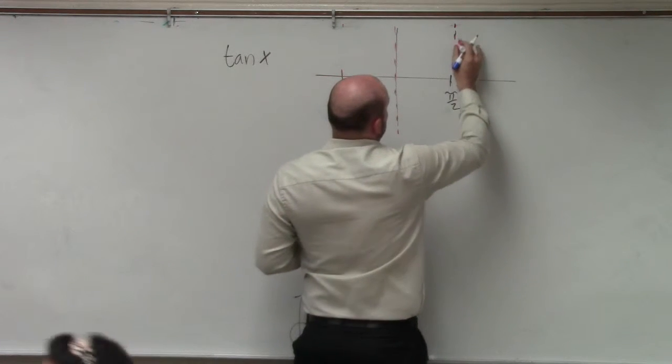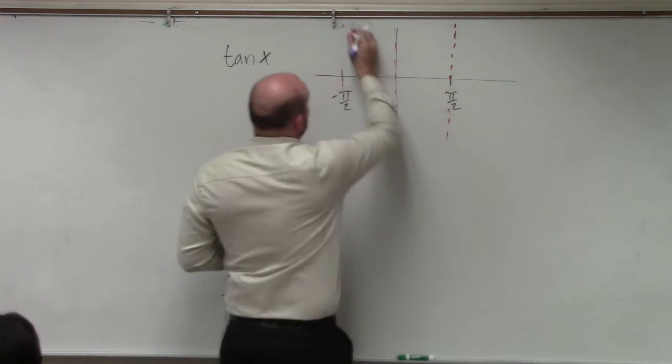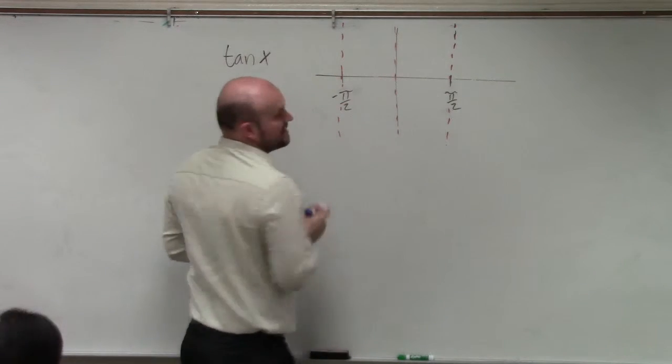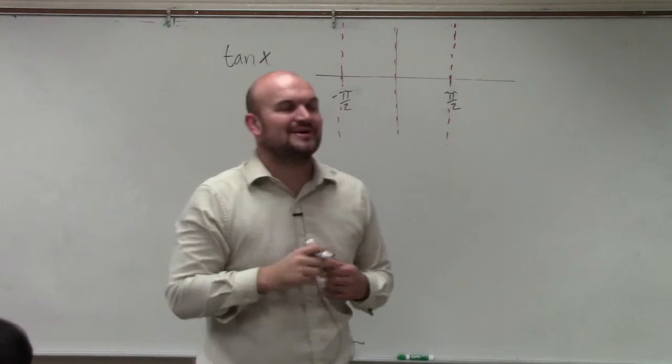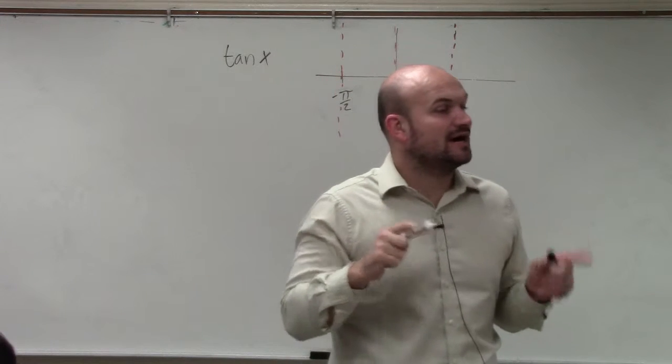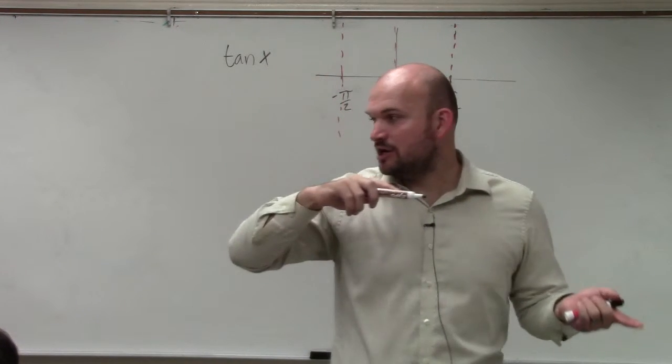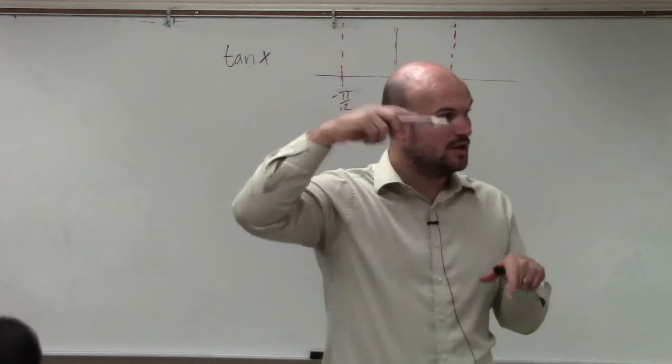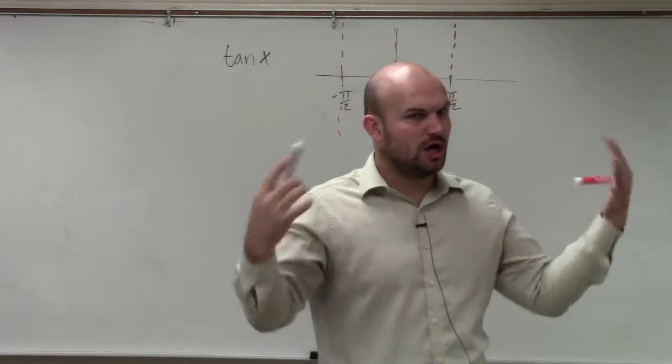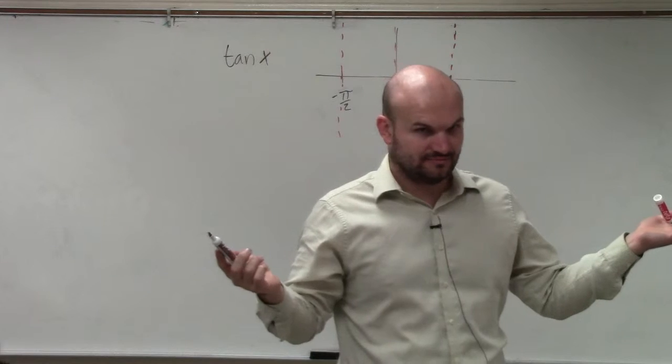So pi halves. If you guys look at the point pi halves, which is same as 90 degrees, that coordinate point is 0 comma 1, right? So 1 over 0, because remember tangent is y over x. 1 over 0 is undefined, correct? OK.